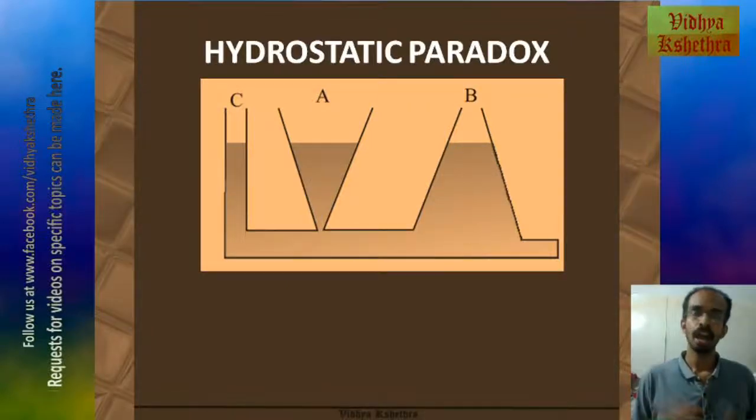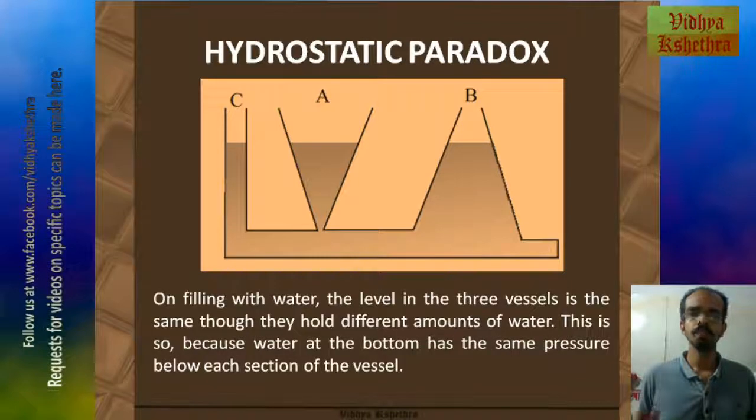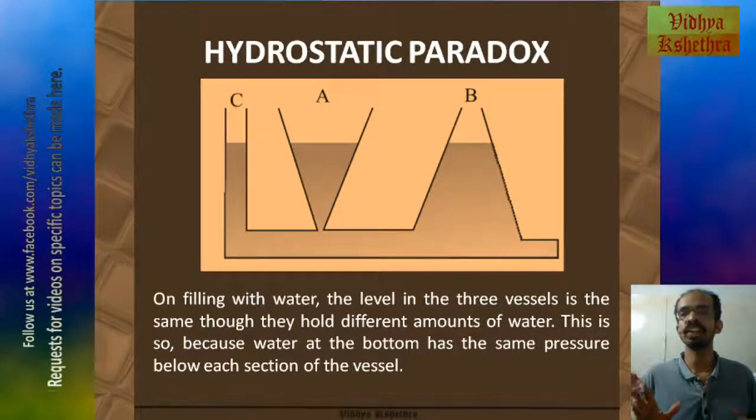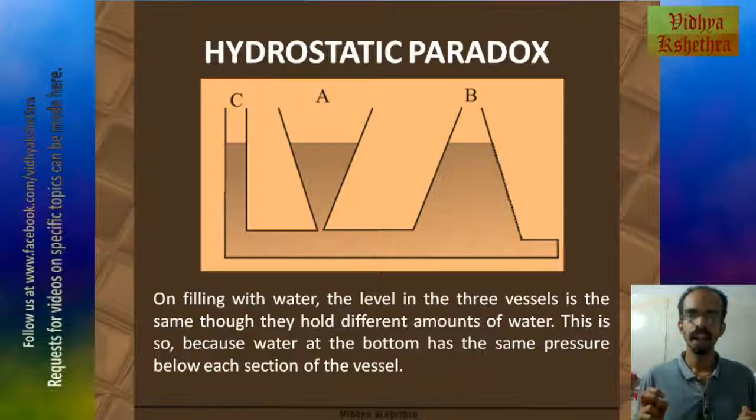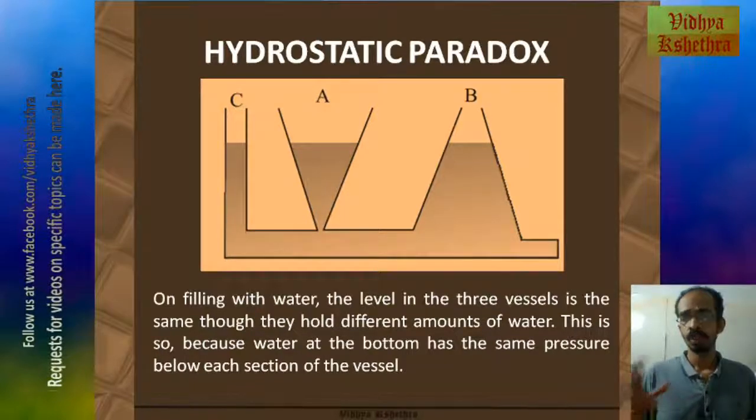Here the height of the fluid in these three vessels is the same. This is because on filling with water, the level in the three vessels is the same though they hold different amounts of water. This is so because water at the bottom has the same pressure below each section of the vessel, and hence the height of the fluid has to be equal in all these vessels for the pressure at the bottom to be equal. This is known as hydrostatic paradox.